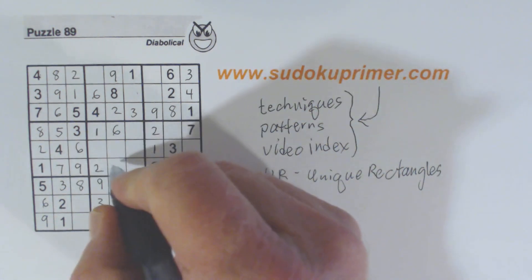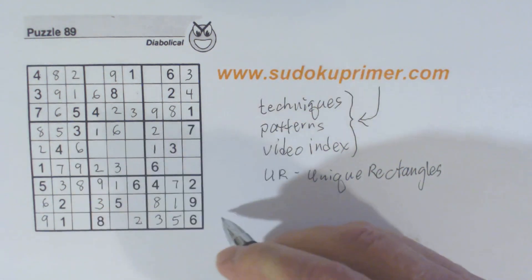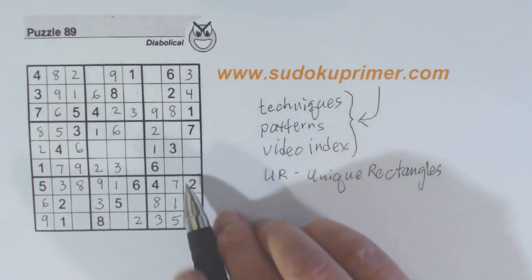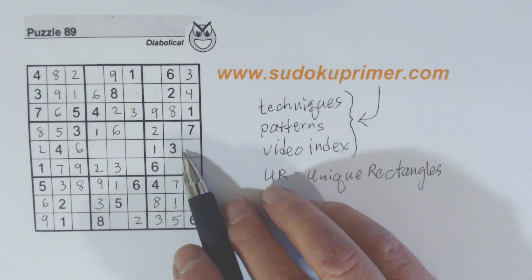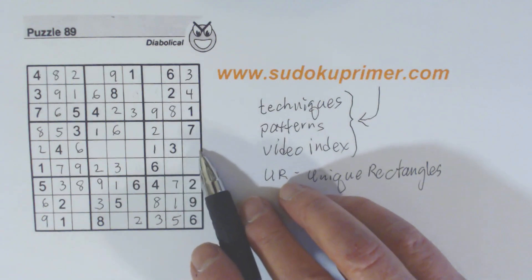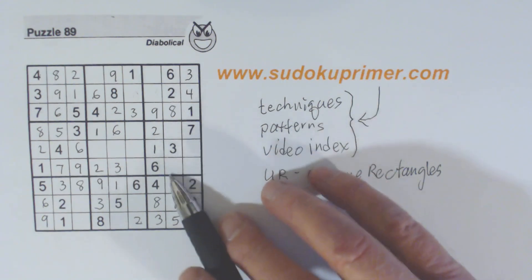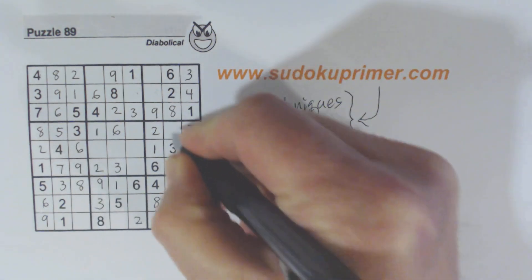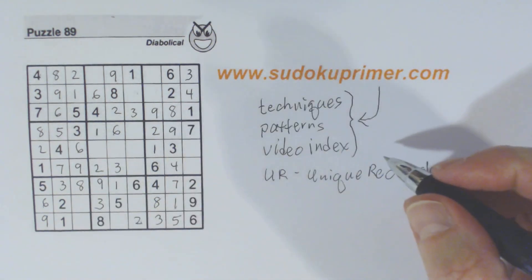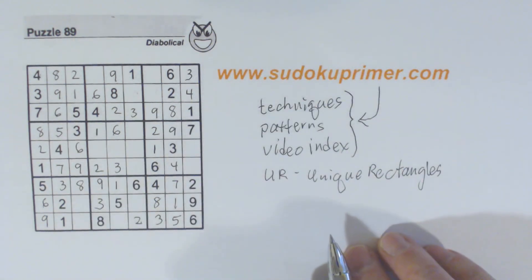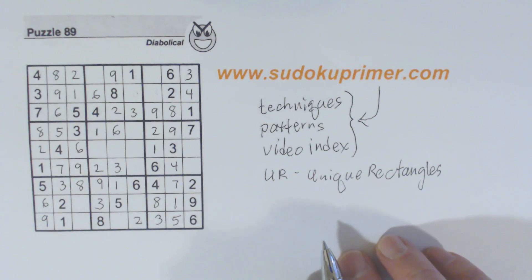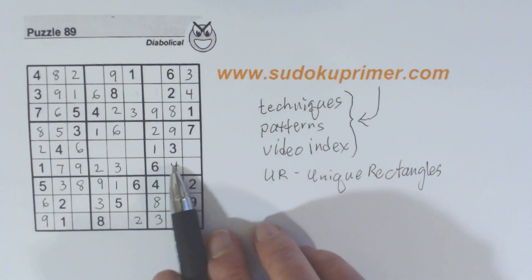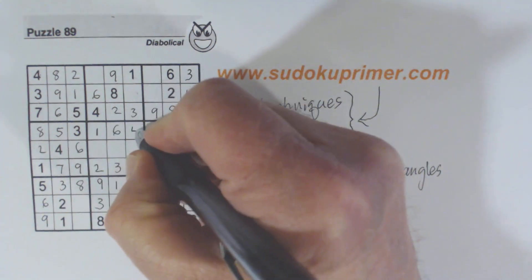And we've got a three right here — pretty straightforward. Now our four-nine twins that we found earlier, we can solve those. And with those fours, with that four replaced, we know that's four.